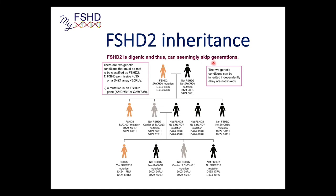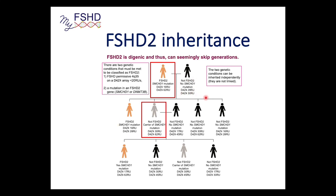Because FSHD2 is digenic, it can seem like it skips generations. If you have FSHD2 — an SMCHD1 mutation plus a D4Z4 in the right range — and you pass that on to a child, instead of 50% it's only 25%, because there's a 50% chance they get the SMCHD1 mutation and a 50% chance they get the correct-size D4Z4 repeat unit from you — so that's 25% inheriting both from the same parent. You can also have a child who appears healthy but is a carrier of the SMCHD1 mutation.